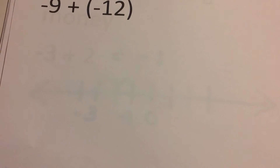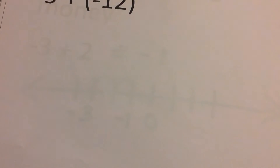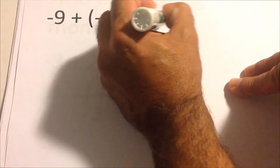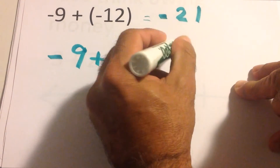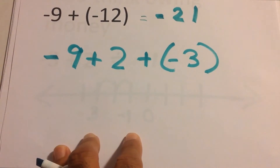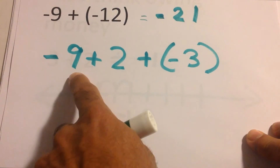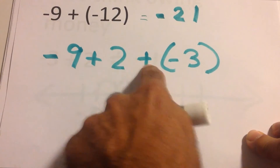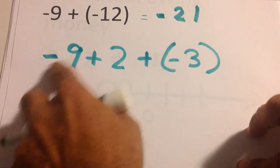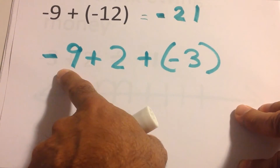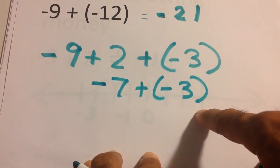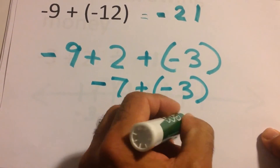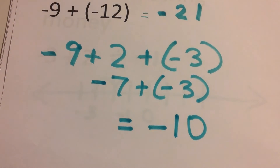Owing money also works with bigger numbers: you owe nine, then you owe twelve more, so you owe twenty-one. You can also do three or more numbers — just do them one at a time. For negative nine plus two plus negative three: you owe nine but have two, so now you owe seven; then you owe three more, so the answer is negative ten.